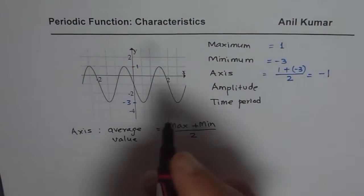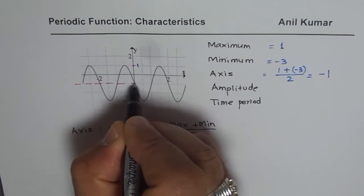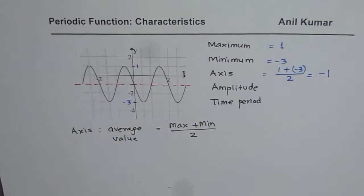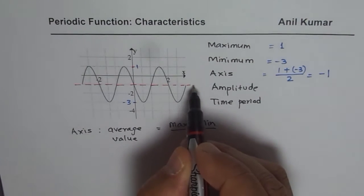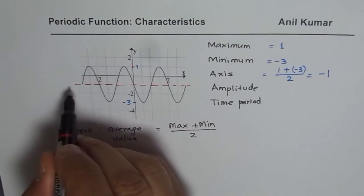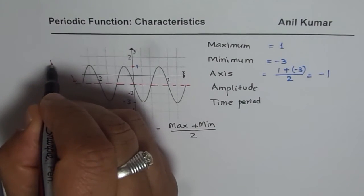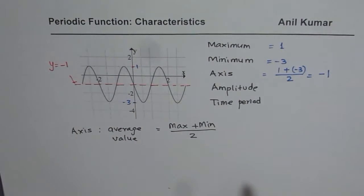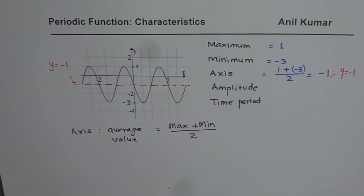Once we get the axis we can sketch it on the graph. Let me draw the axis here on this particular graph. The equation of the axis, since it is a horizontal line, can be written as y = −1, a constant y value.